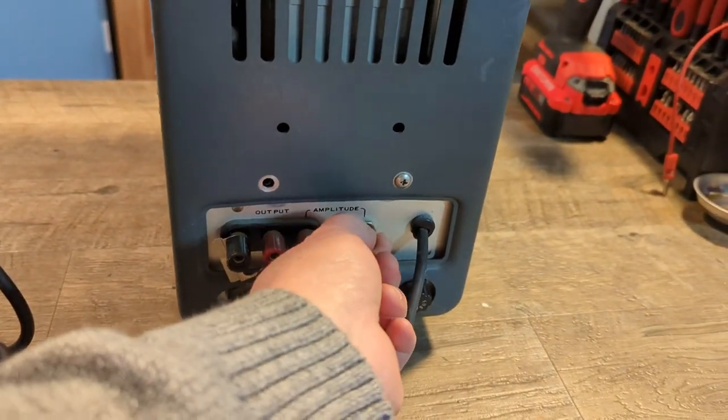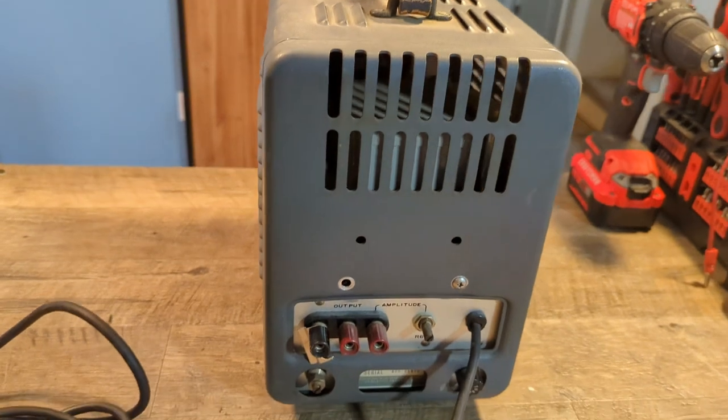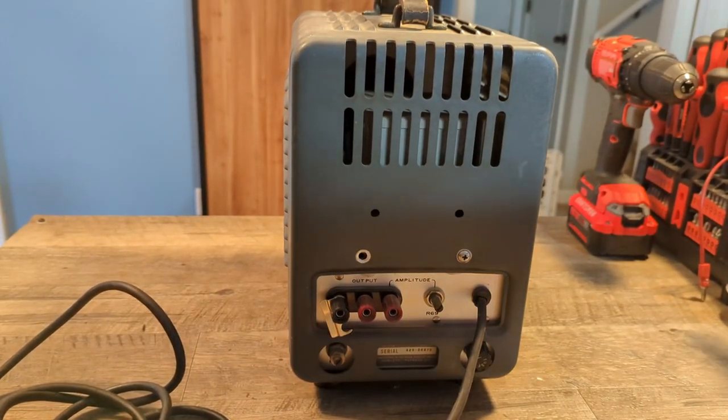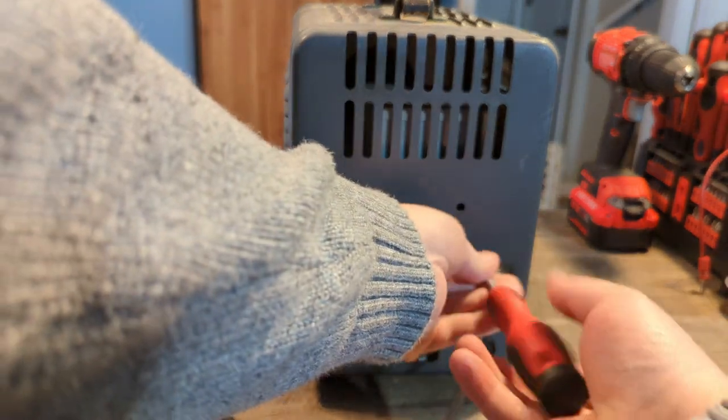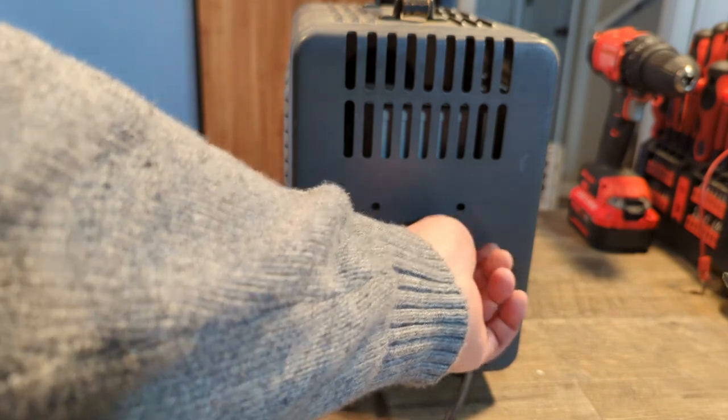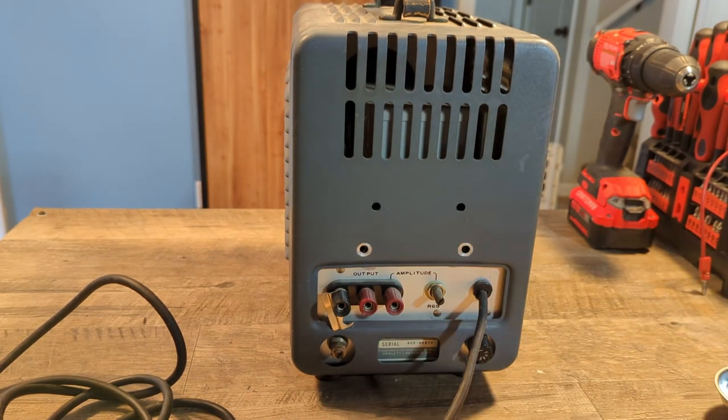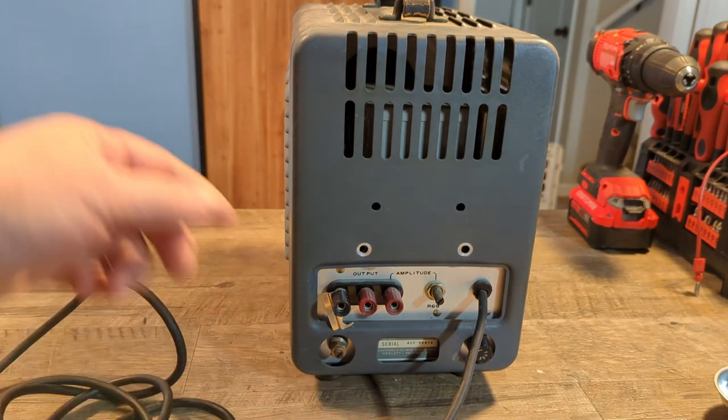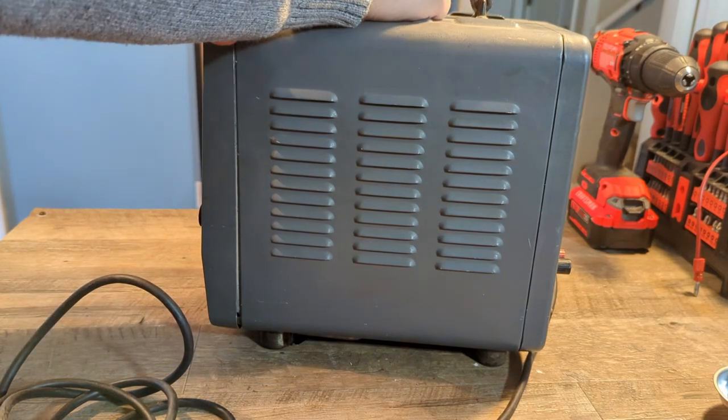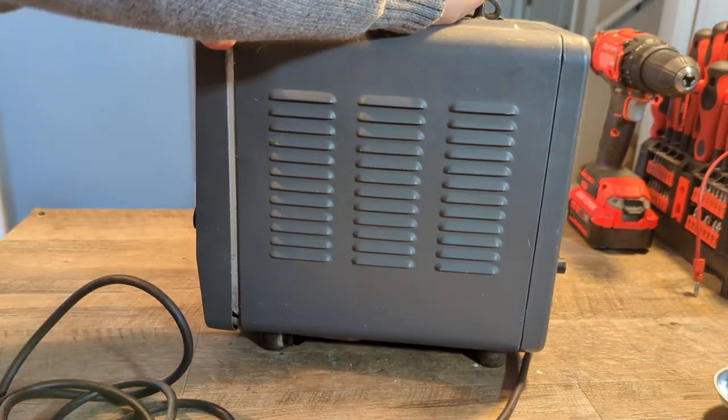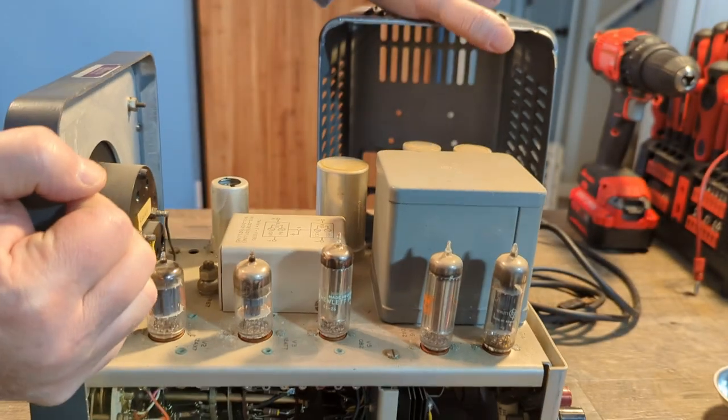There's a fuse holder and then your amplitude adjustment for your attenuated output. So that's the back. Let's take this thing apart and see what we got inside. Now I've already taken one of the screws out to make this easier. Let's slide this out.